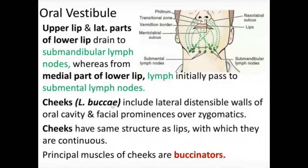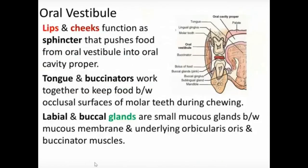The cheeks are the buccal, lateral, distensible walls of the oral cavity, with facial prominences over the zygomatic bone. They have the same structure as the lips — muscle in the middle, mucous membrane inside, and skin outside. The principal muscle of the cheek is the buccinator muscle.